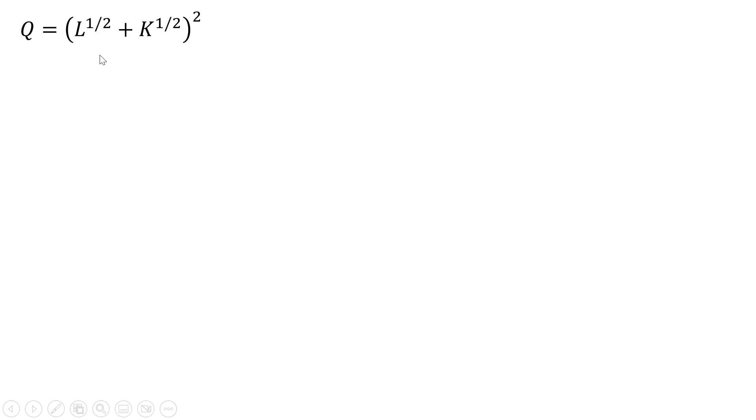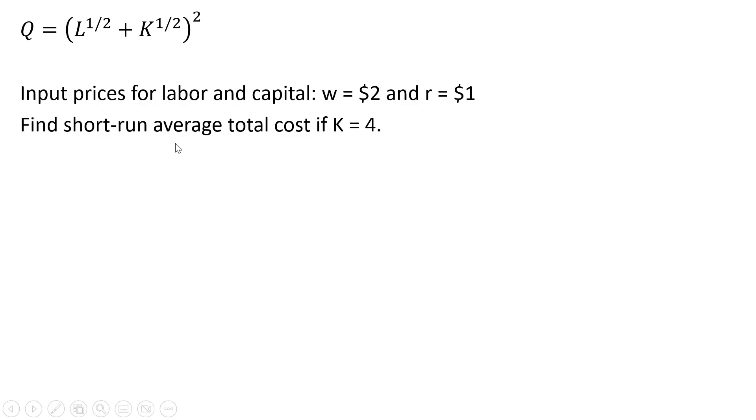Here's the firm's production function. It is a function of units of labor, L, and units of capital, K. The input prices for labor and capital are $2 and $1 respectively. We want to find the short run average total cost, assuming capital, K, is fixed at 4 units.